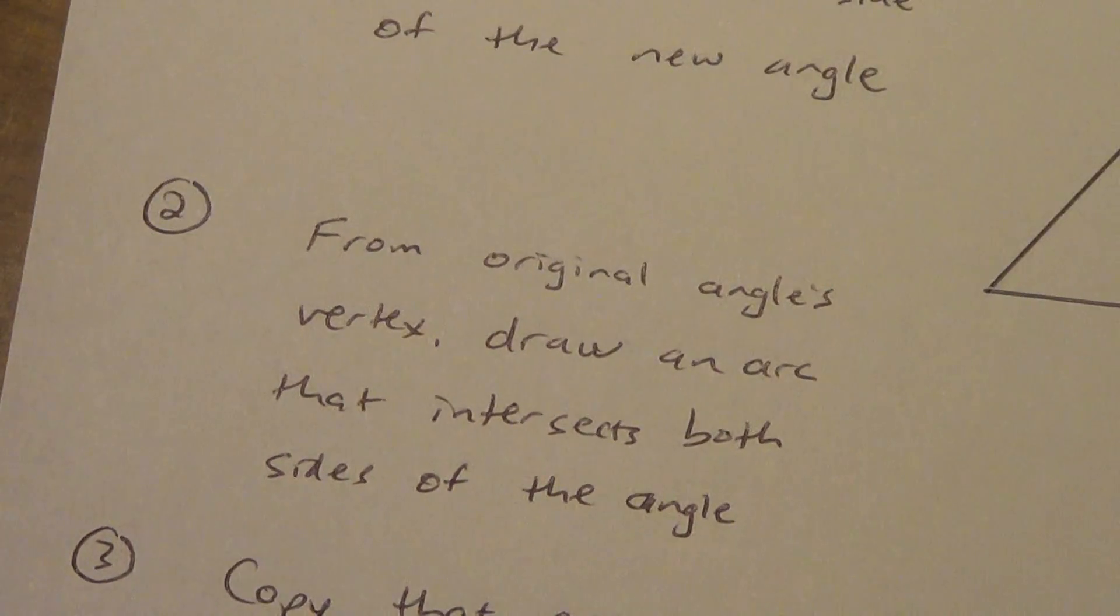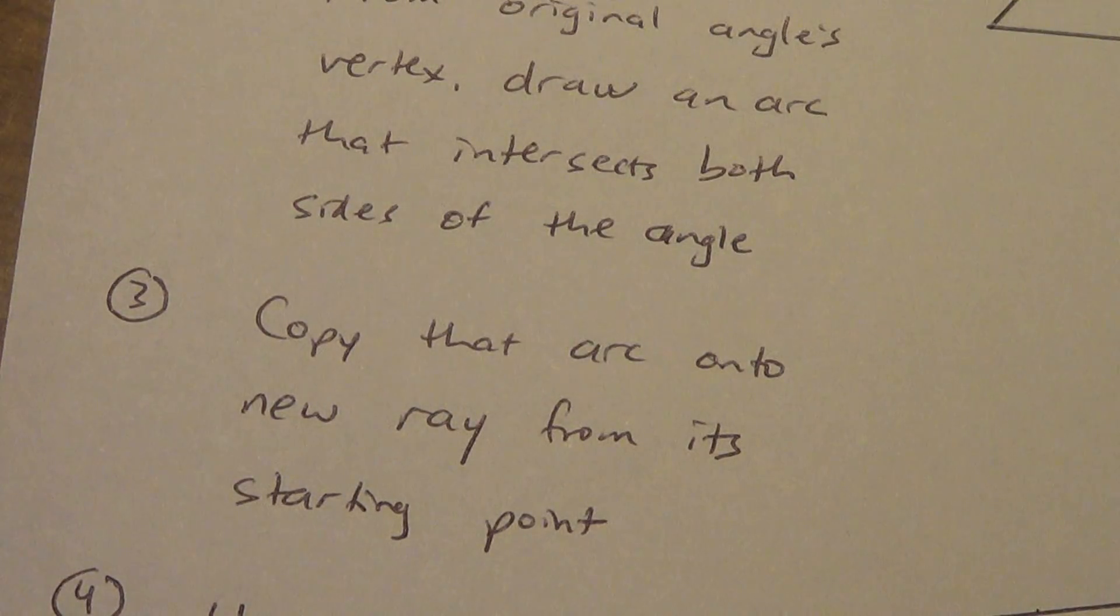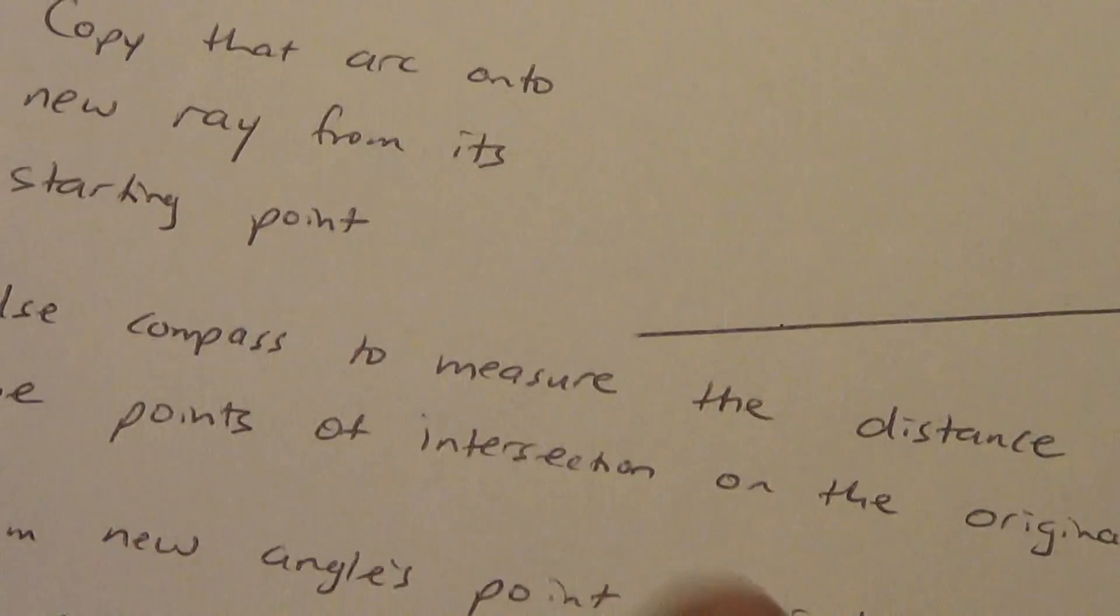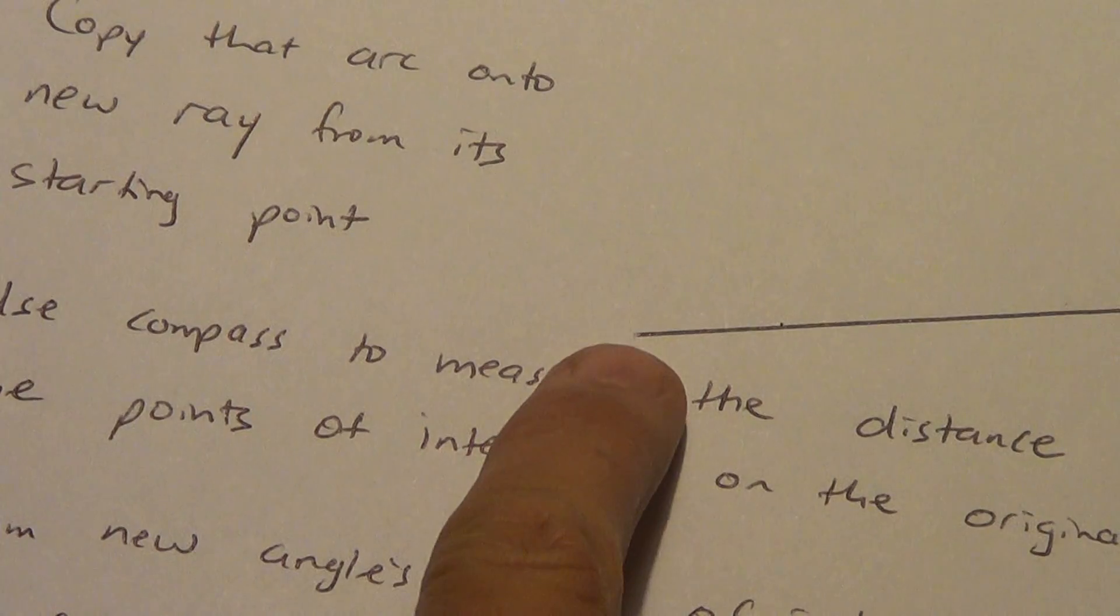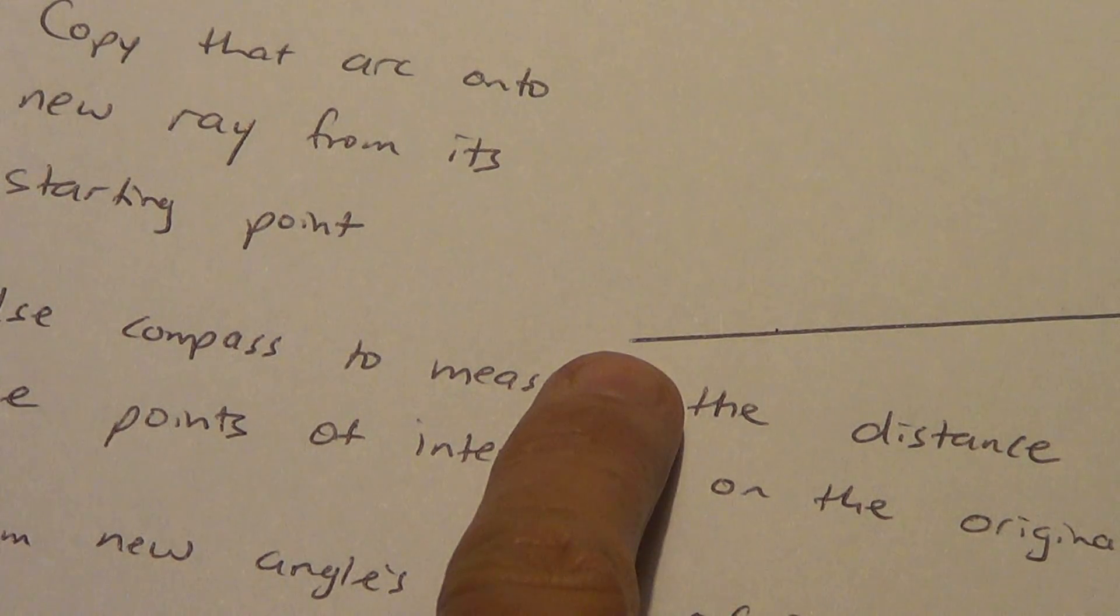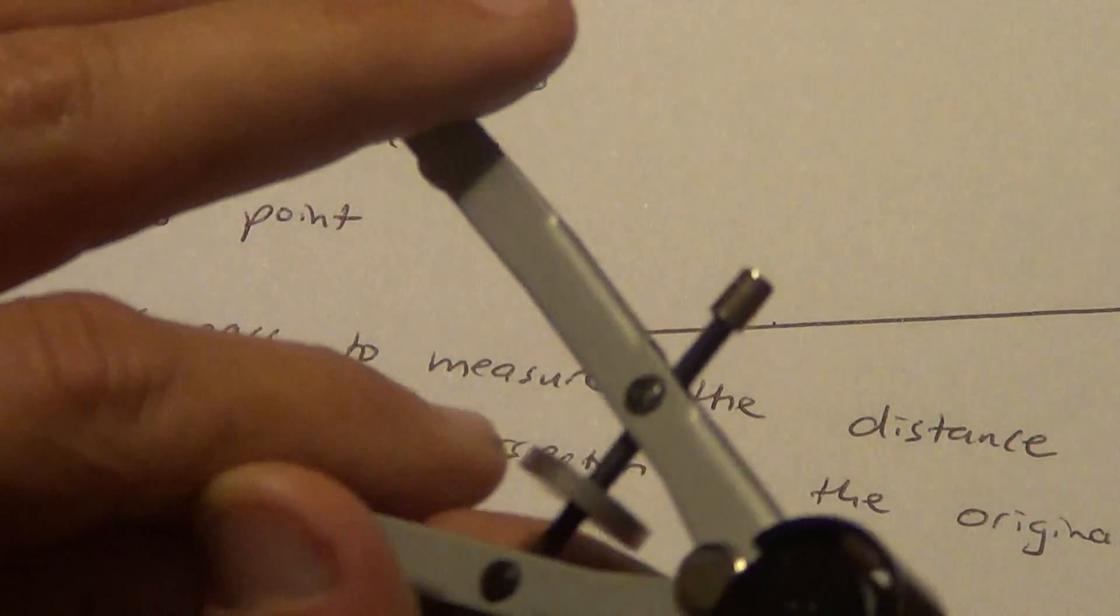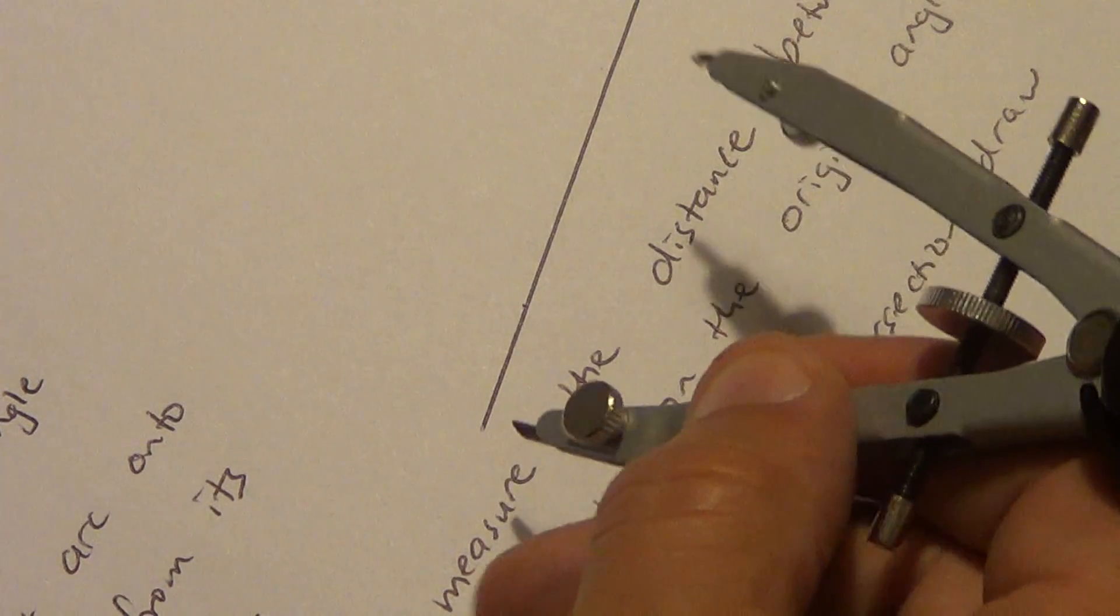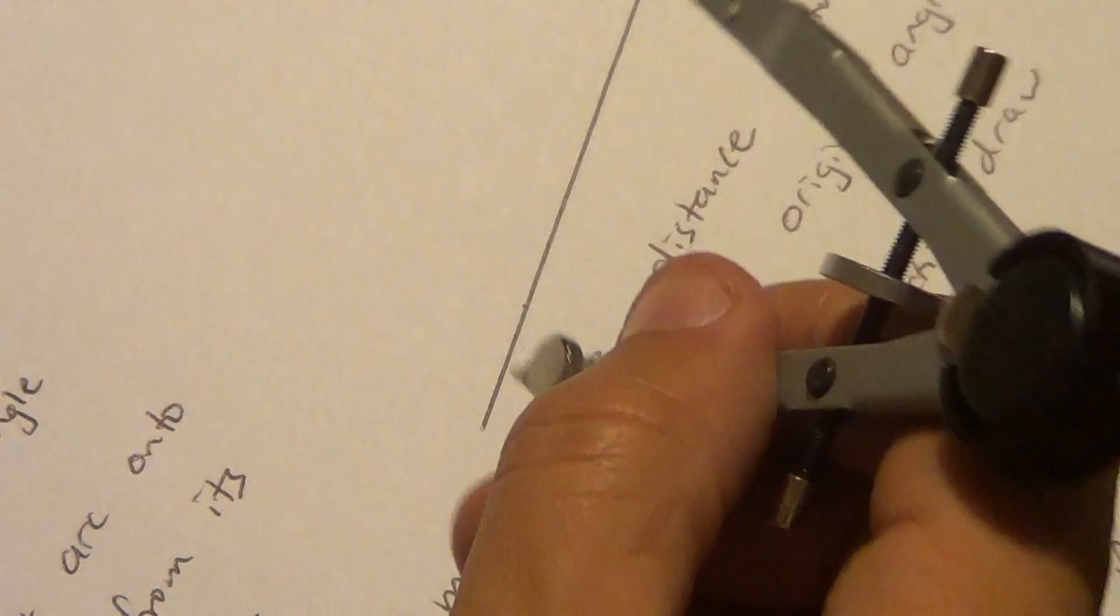Now let's go to step three. Copy that arc onto the new ray from its starting point. Remember, this ray has a starting point right here. I have not changed my compass yet, you don't want to change that. If you changed it, you're already running into a problem. It's got to be the same distance. So I didn't change it. So from this ray's starting point...